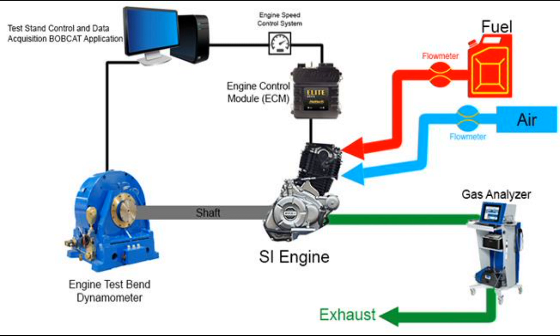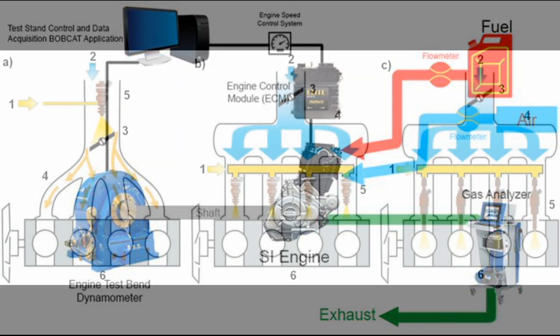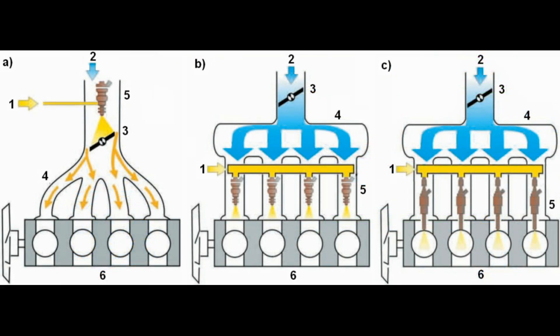Power stroke: at the end of the compression stroke, a spark is produced by the spark plug. This spark ignites the air-fuel mixture and combustion takes place in the combustion chamber. Due to combustion, a very high thrust force is generated which pushes the piston downward rapidly and makes the crankshaft rotate. This stroke is called the power stroke because we get power in it. Both inlet and exhaust valves remain closed in this stroke.